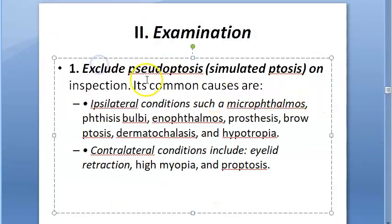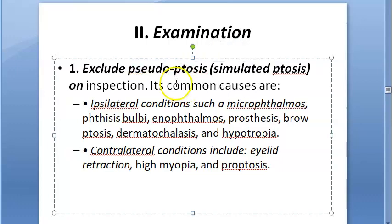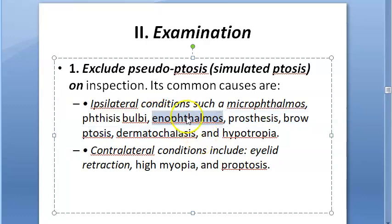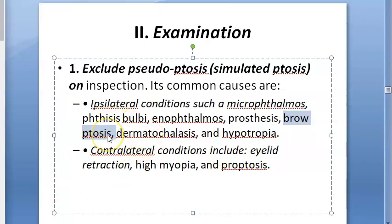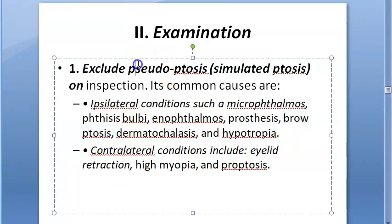After taking history, you examine the patient. First, you will exclude whether it is pseudo-ptosis — a simulated ptosis. It looks like ptosis because of a small eye (micro-ophthalmos), phthisis bulbi (a blind eye undergoing atrophy), or enophthalmos (the eye is a little inset). Prosthesis — an artificial eye — can also simulate ptosis. Brow ptosis, where the eyebrow is lower than normal, is also a pseudo-ptosis; nothing is wrong with the eyelid itself.